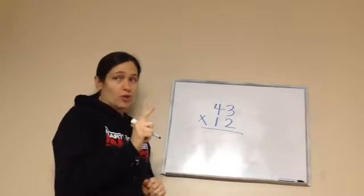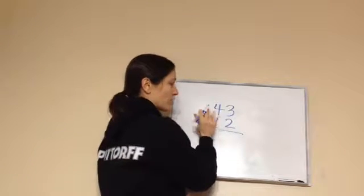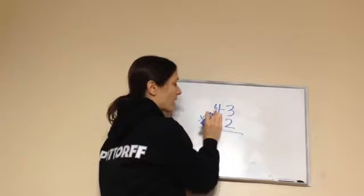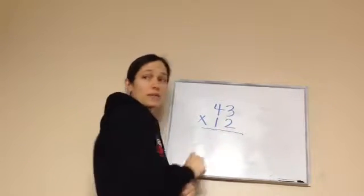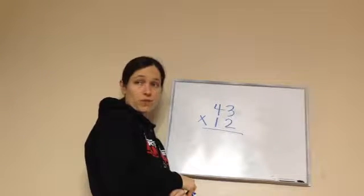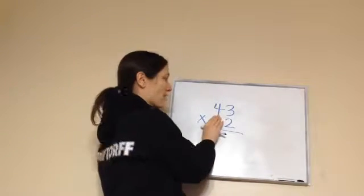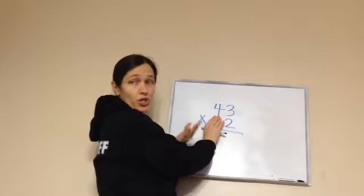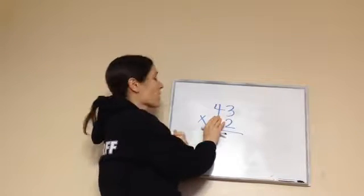So I want you to show you something. Let's just look at that two for just a second. What place is this two in? One. The one place. So if I multiplied 43 times two, I would get a certain answer, 86.